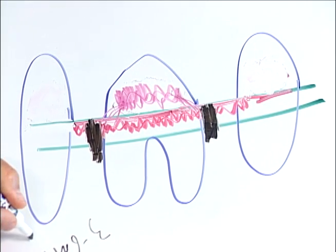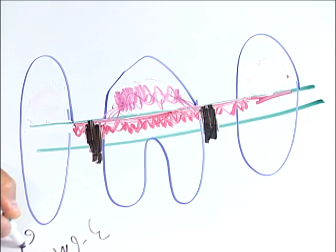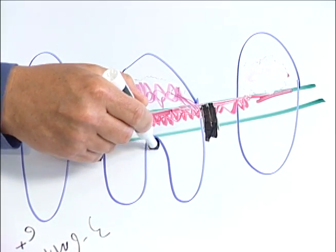once you get pockets that are six millimeters plus, or the furcation, which is the area between the roots, becomes exposed,